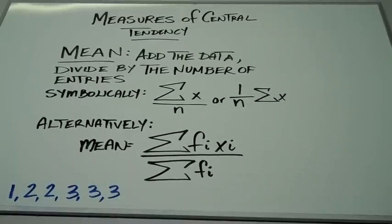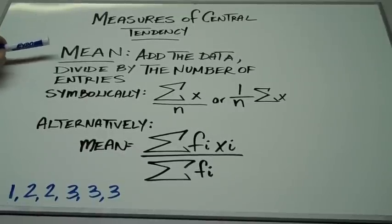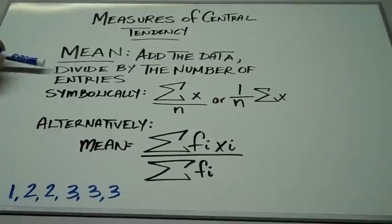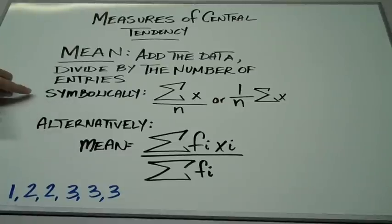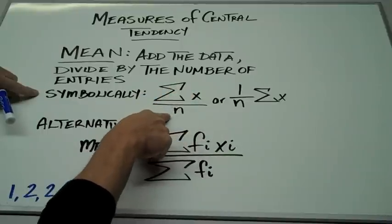The next measure of central tendency I want to talk about is the mean. The mean is simply the average. To find the mean, we add all the data and then we divide by the number of entries. Symbolically, we could say it's the sum of our data divided by n, the number of entries.